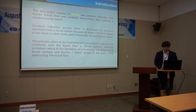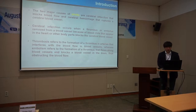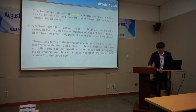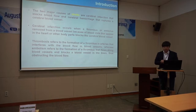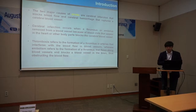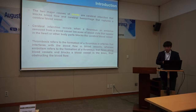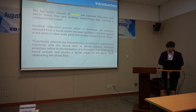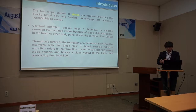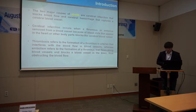The two major causes of stroke are cerebral infarction and cerebral hemorrhage. Cerebral infarction occurs when thrombosis or embolism blocks a blood vessel. Thrombosis refers to the formation of a clot in arteries that interferes with blood flow, whereas an embolism refers to a clot that travels through the bloodstream, obstructing blood flow.